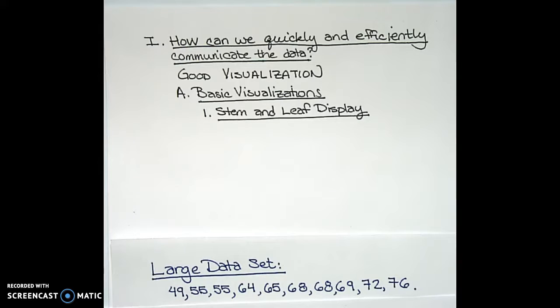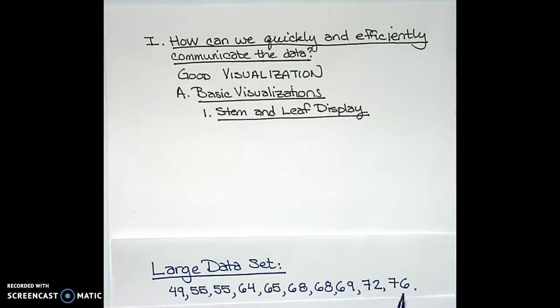There are 10 values in this data set. The numbers are 49, 55, 55, 64, 65, 68, 68, 69, 72, and 76.